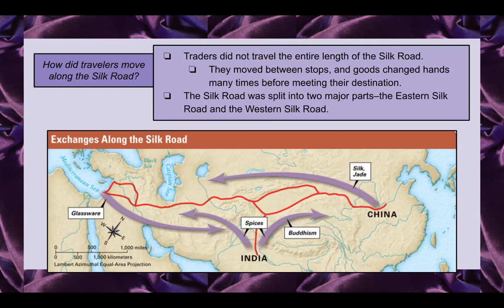How did travelers move along the Silk Road? Traders did not travel the entire length of the Silk Road. They moved between stops, and goods changed hands many times before reaching their destination. The Silk Road was split into two major parts: the Eastern Silk Road and the Western Silk Road. People wouldn't travel the whole way — they would go a certain distance, stop, trade their goods, and then go back.